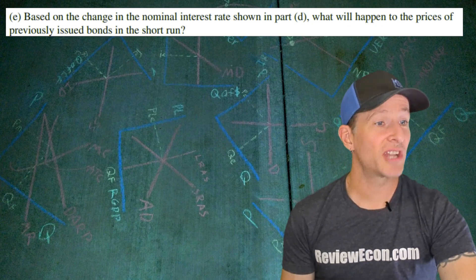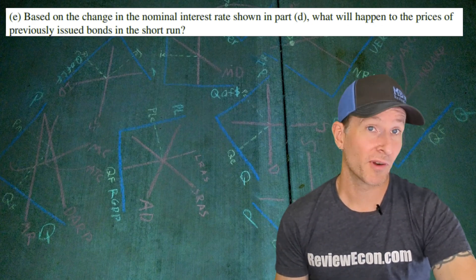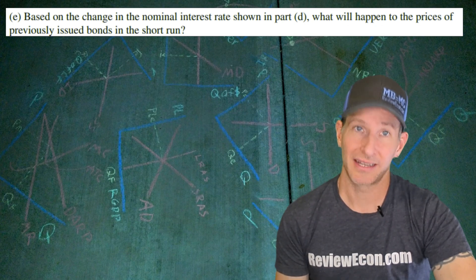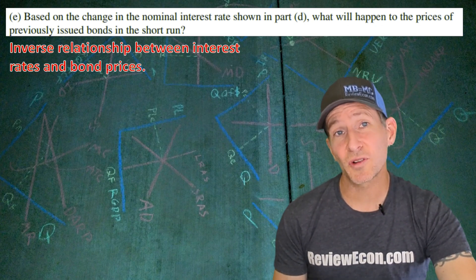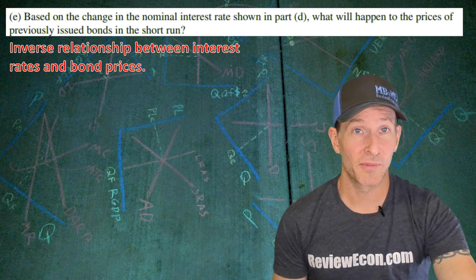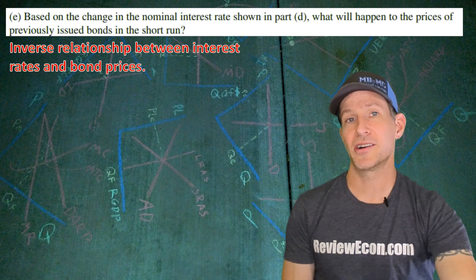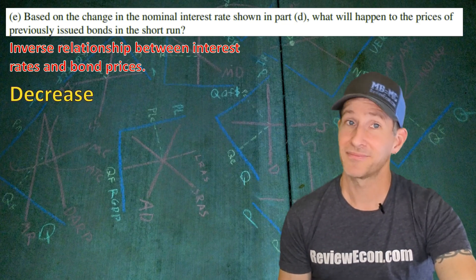For part E we're going to look at the change in nominal interest rate that we just drew in part D and say what will happen to the price of bonds that are already issued in the short run. We need to remember that there's an inverse relationship between the interest rate and bond prices. Since we saw an increase in the nominal interest rate in the money market graph that means that bond prices are going to decrease.